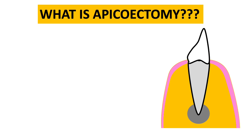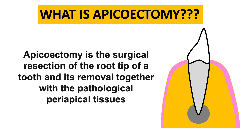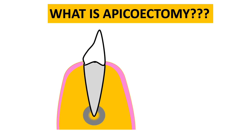What is apicectomy? Apicectomy is a surgical resection of the root tip of the tooth and its removal together with the pathological periapical tissue. Simply put, we have to remove the root tip along with the associated pathology. In normal RCT we are not able to remove the pathological tissue, so we perform an apicectomy.